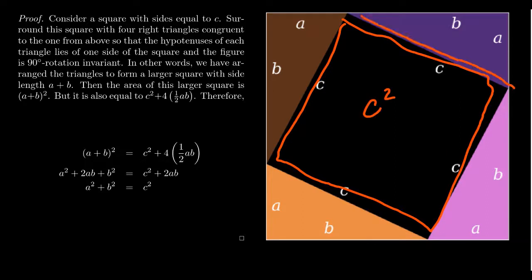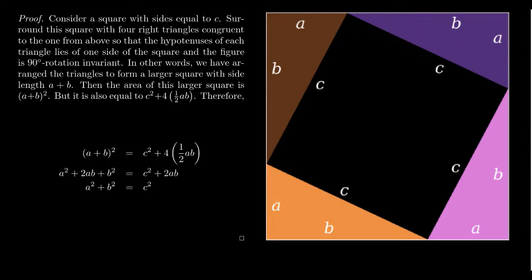The area of each right triangle is one-half base times height, so one-half times A times B. There are four such triangles, so their combined area is 4 × (1/2)AB. Therefore, the area of the large square equals C² plus 4 × (1/2)AB, meaning (A + B)² = C² + 4 × (1/2)AB.